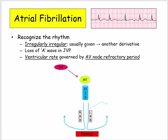A second easy derivative is what determines the ventricular rate in a patient with atrial fibrillation. The atrium quivers at a rate of about 400 beats per minute, so why doesn't the ventricle pump at that rate? The answer is the AV node — specifically its refractory period. The ventricular rate is governed by the number and rate of impulses transmitted through the AV node. That's derivative number two.